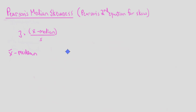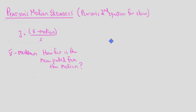Here's the equation for Pearson's Median Skewness, or Pearson's Second Equation for Skew. Let's start by looking at x-bar minus the median. This is telling us the distance between the mean and the median — how far the mean is being pulled away from the median. If we have a symmetrical distribution, the mean and the median will be equal to each other, meaning this part of the equation will give us zero, indicating no skew.